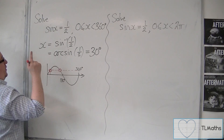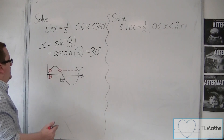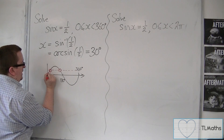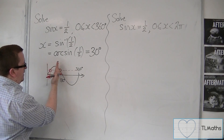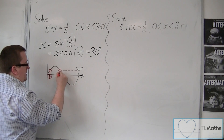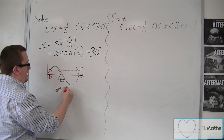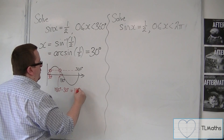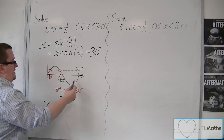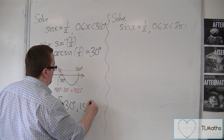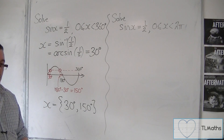This first crossing point is 30 degrees. Now, what you need to know is how we work with the symmetry of the curve. Because if this distance between 0 and 30 is 30 degrees, then because 180 is a midpoint, reflecting that part of the curve, the distance on the other side is exactly the same. So we find the second value by doing 180 take away 30, which gives us 150 degrees. We have two solutions between 0 and 360 degrees: 30 degrees and 150 degrees.